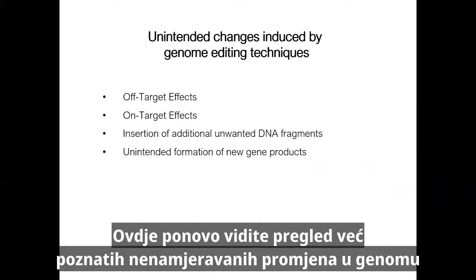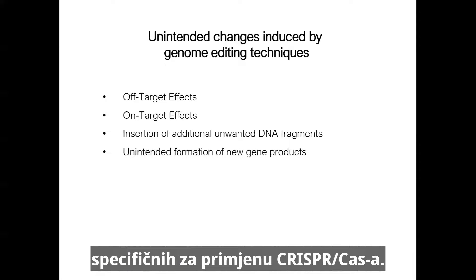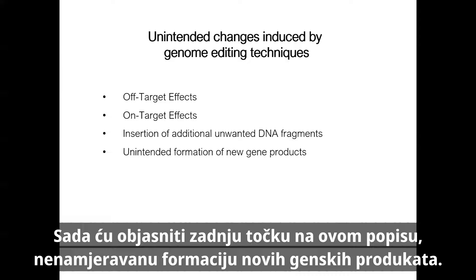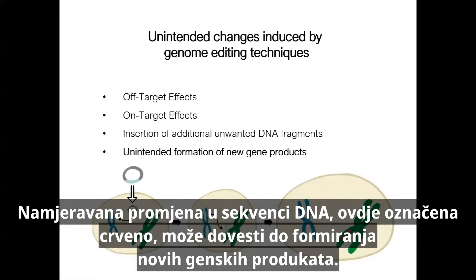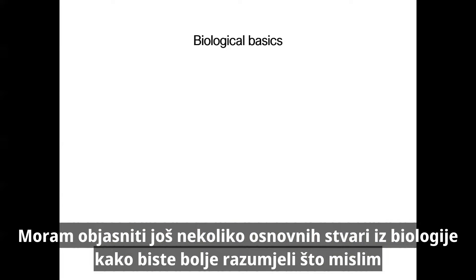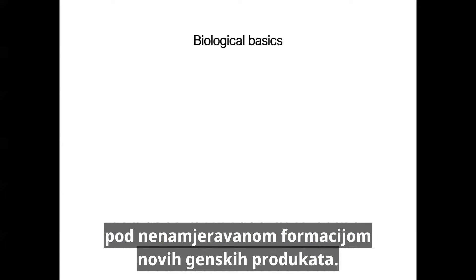Here you can see an overview of the already known unintended changes in the genome that are specific to the application of CRISPR-Cas. I will now explain the last point on the list: the unintended formation of new gene products. The intended changes in the DNA sequence can lead to the formation of new gene products.